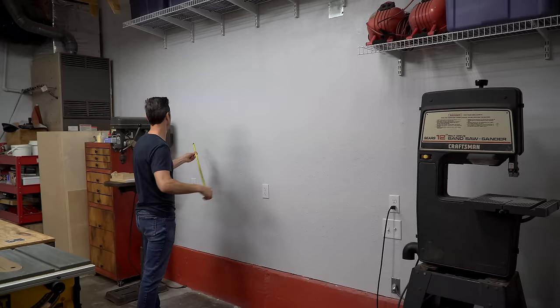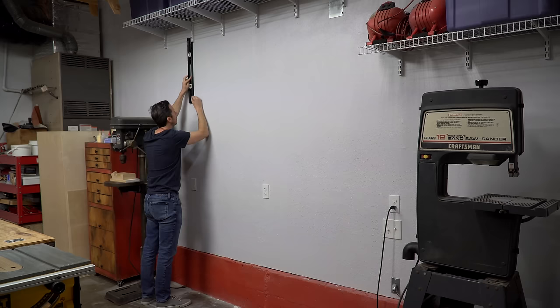The first thing I did was measure out the space to help me determine the size I wanted for the board. Then I started marking the stud locations just above and just below where the board was going to go.